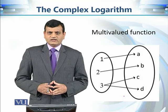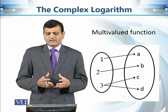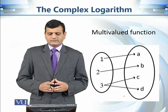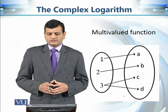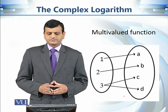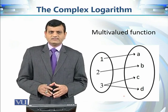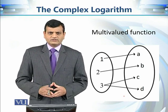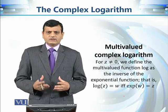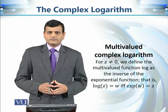A multivalued function is a generalization of a function where each element of A is not assigned to a unique element but can be assigned to more than one element. For example, an element can be mapped to two elements instead of one. According to the strict definition of a function it is not a function, but it is a multivalued function — a generalization of the concept. We cannot define a single-valued logarithmic function as the inverse of the exponential function.